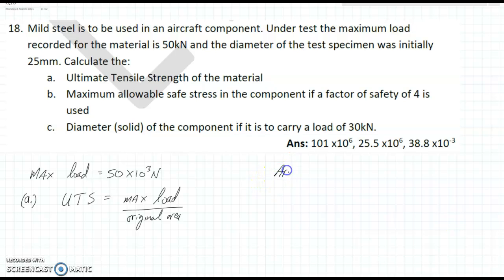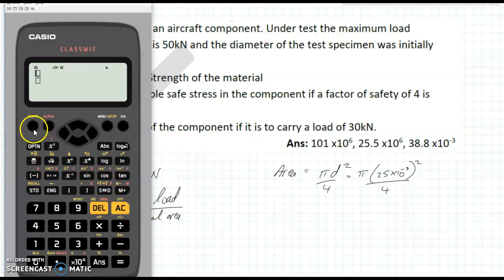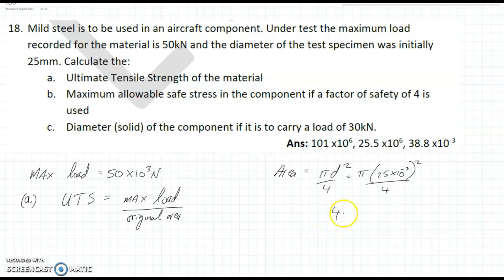So, the area, the cross-sectional area, is going to be pi d squared over 4. So, that's pi times 25 by 10 to the minus 3 squared over 4. And, you can see that into the calculator there. And, multiply by 25 into the minus 3, square that. That's all over 4. And, that gives us, with ng that there, we get 490.87 by 10 to the minus 6 square meters. And, that's the cross-sectional area of the component.